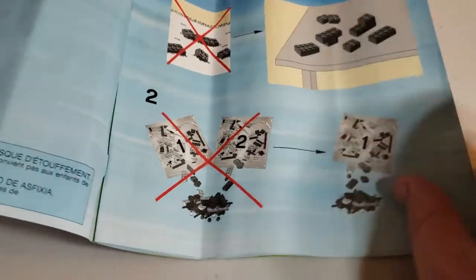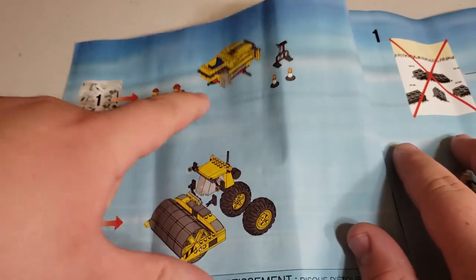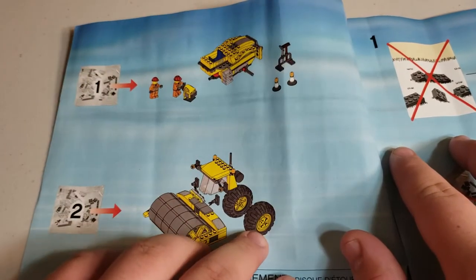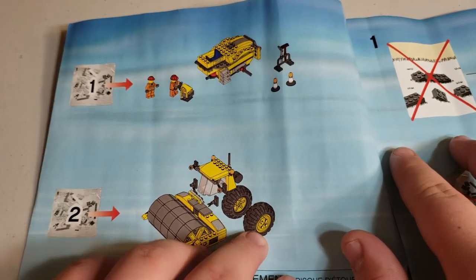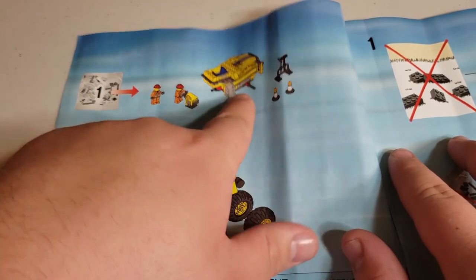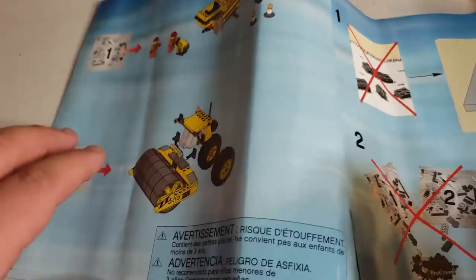It has two bags. One thing I thought was funny is usually when they show the second picture, it's the completed build. They just have stage one and that's stage two. I thought that was funny.